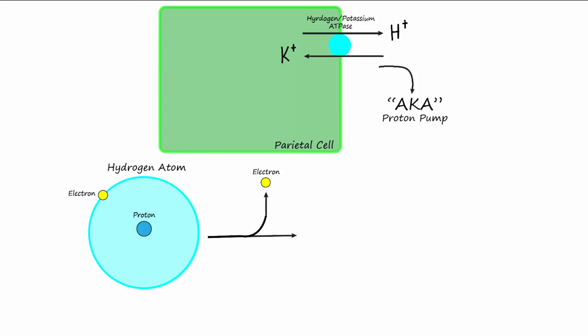It is important to note that the hydrogen potassium ATPase is more commonly known as the proton pump. Why is it called a proton pump? Well, remember that a regular hydrogen atom has one proton, one electron, and no neutrons. If the electron is lost, then all that is left over is a proton.